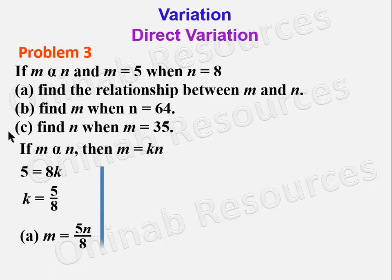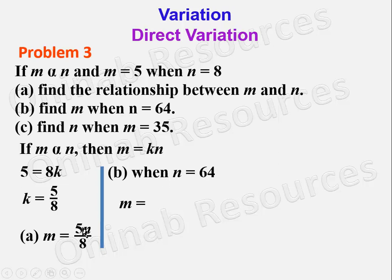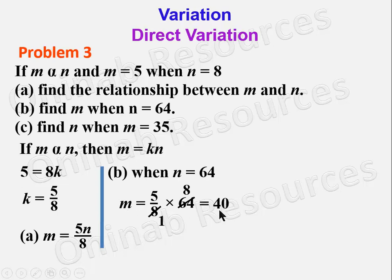For part (b) of problem 3, find M when N is 64. When N is equal to 64, M will be equal to 5 over 8 times 64. 8 goes into 64 to give 8, and 8 times 5 gives 40. So M is equal to 40 when N is 64.